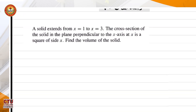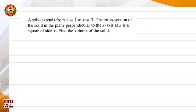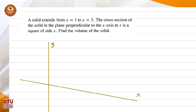Let's try this next problem. A solid extends from x equals 1 to x equals 3. The cross section of the solid in the plane perpendicular to the x-axis at x is a square of side x. Let's find the volume of the solid. First, let us visualize it using three axes — the y-axis, x-axis, and z-axis.